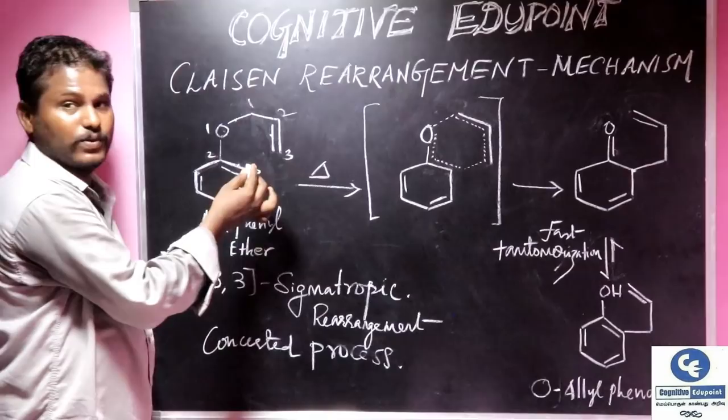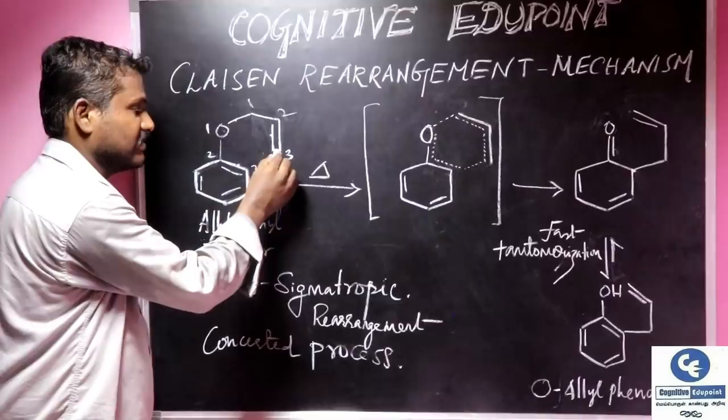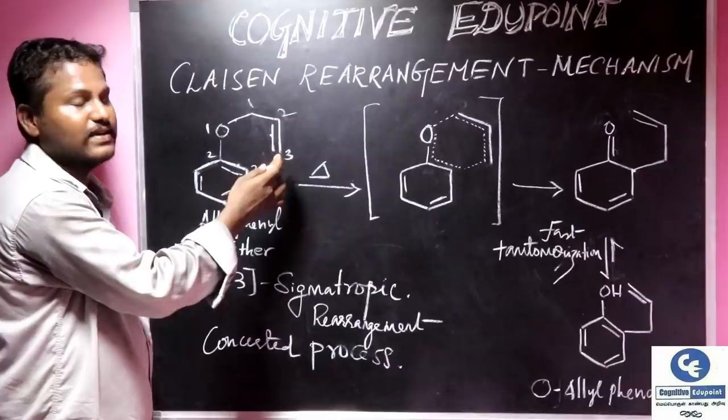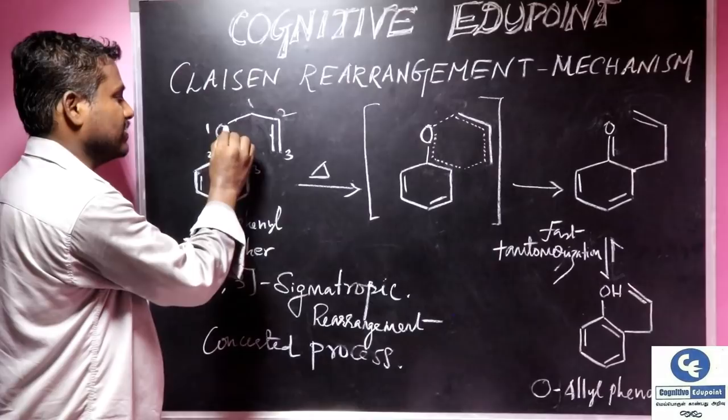It can undergo [3,3] sigmatropic rearrangement, which means 3,3. There will be a new bond formed between third carbon to another third carbon. That is the result of a sigmatropic rearrangement. It can form a 6-membered cyclic intermediate.